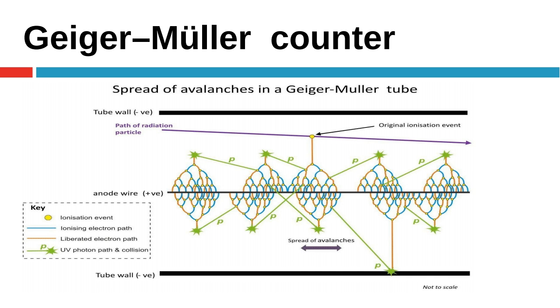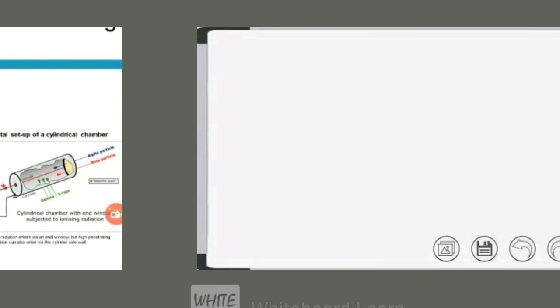Gradually the positive ions move toward the cathode, and the electric field in the counter is regenerated. When the field is almost fully re-established, the counter becomes ready to detect another ionizing particle. During regeneration, pulses produced by subsequent primary ionization have an increasing amplitude with time.